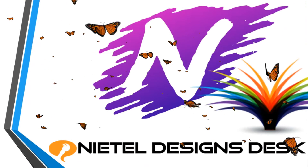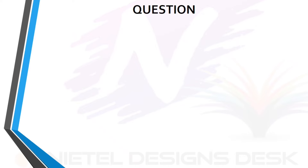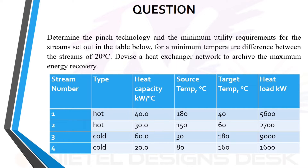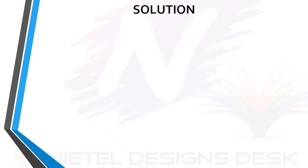Hi, welcome to Needle Designs Desk. In this video we will be looking at a question about the determination of the pinch technology for a minimum temperature difference between streams of 20 degrees Celsius, and also devising a heat exchanger network to achieve the maximum energy recovery. Given the following table, we will use it for calculations having stream numbers, stream type as hot or cold, heat capacities in kilowatt per degree Celsius, source temperatures in degrees Celsius, target temperatures in degrees Celsius, and heat loads in kilowatts.